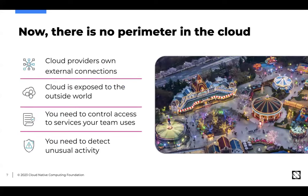Everything around the perimeter has changed with cloud native. Most likely the application is being delivered through the cloud, so the cloud provider manages external connections — different from when everything ran in your own enterprise. Exposure is much larger with cloud native: by default, Kubernetes workloads are on a flat network, so all pods can freely talk to each other with no restrictions. If we're using a load balancer, we can expose that to the public internet, and we don't want to overly expose workloads to threats. We need to control access to services, workloads, and network connections at both the cloud layer and the workload layer.